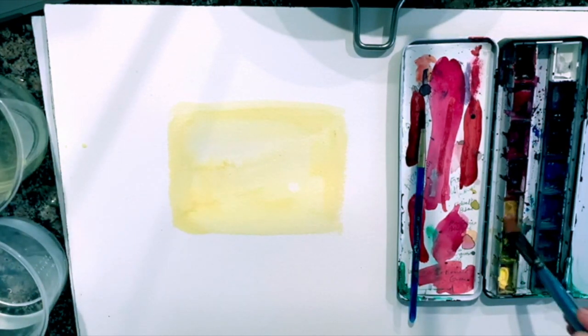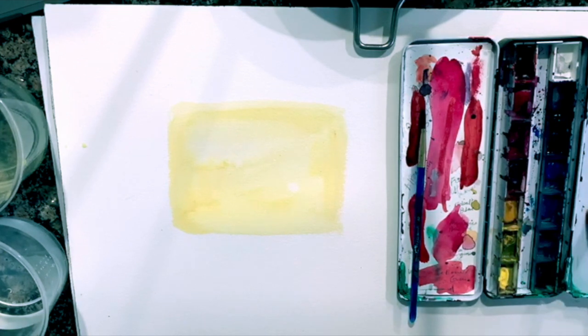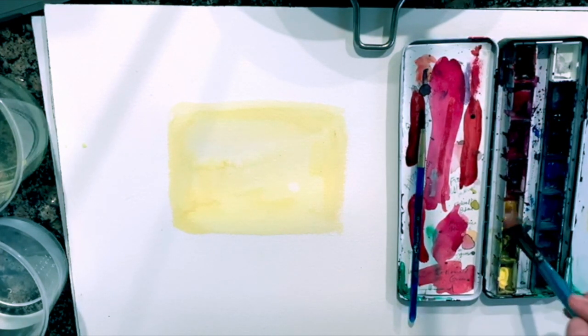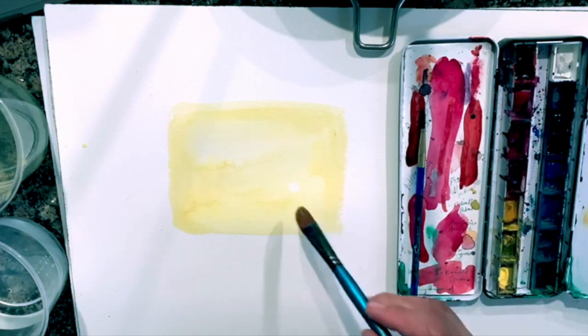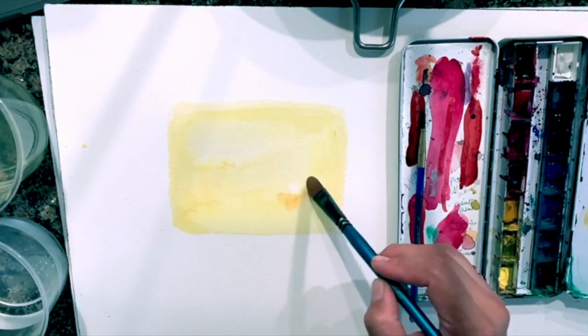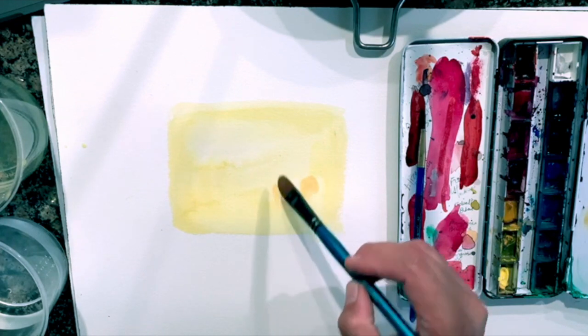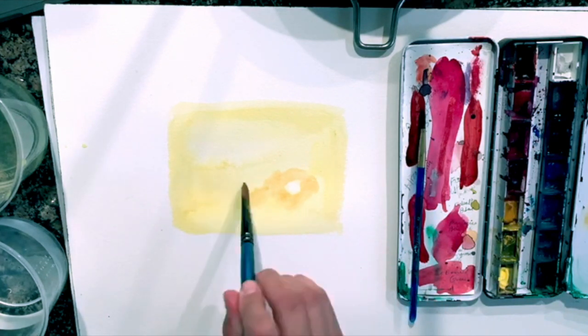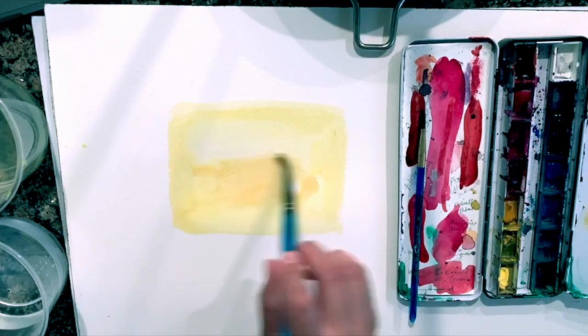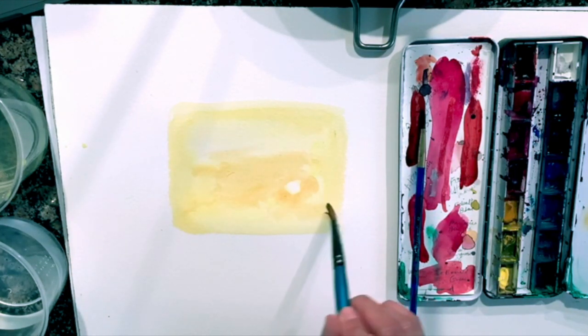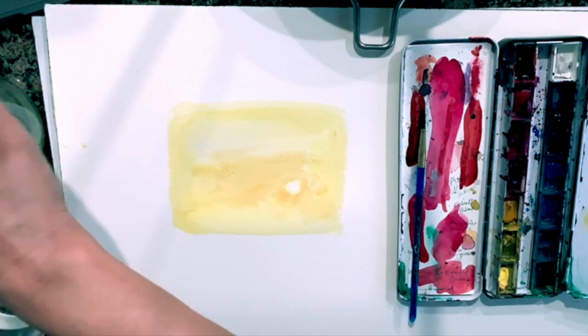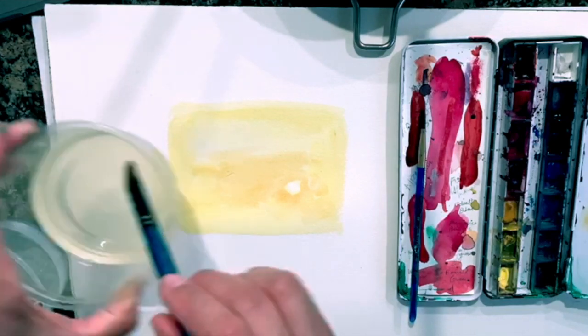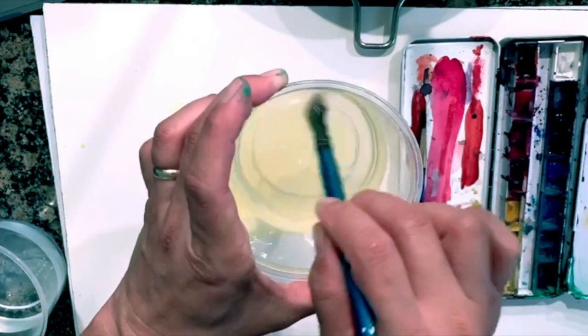And so when you clean your brush you want to move it in a figure eight and then wipe the excess water on the side. And that will get your brush clean. And if you want to dab your paint brush on the paper towel that will dab off the extra excess water. So now we're putting on our orange layer. So we'll just copy what we're doing on the screen. So we have the yellow down and now we're painting the orange layer.